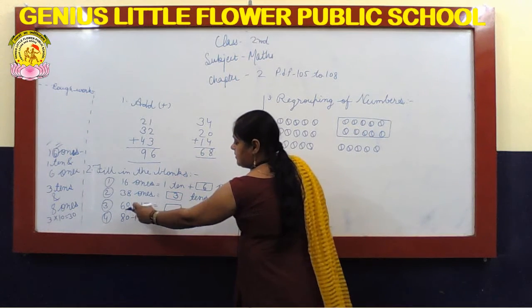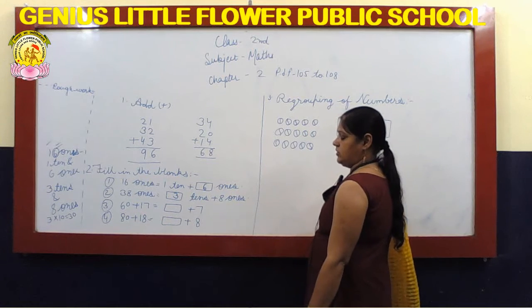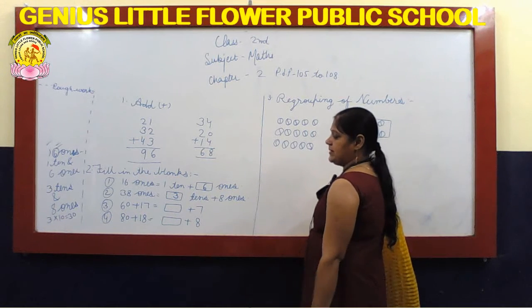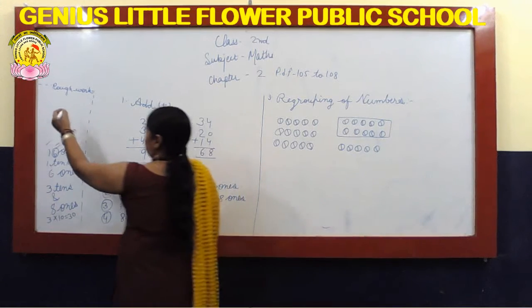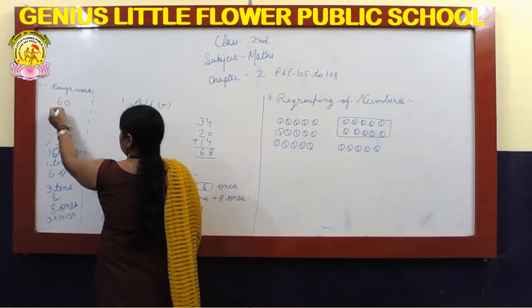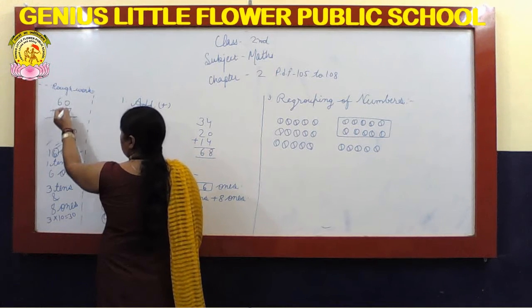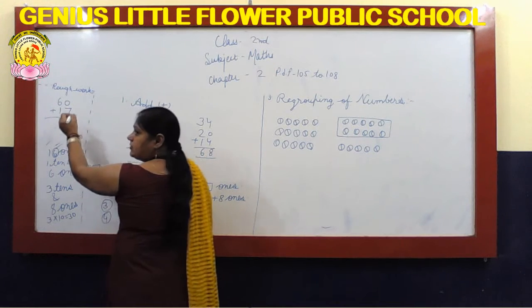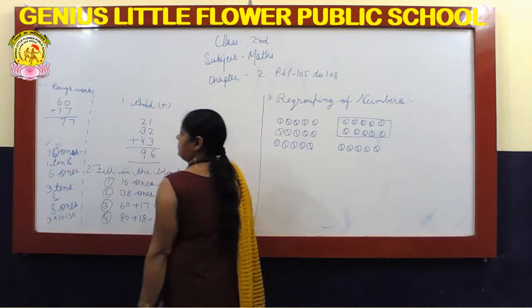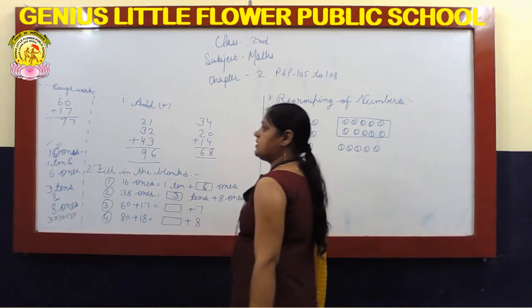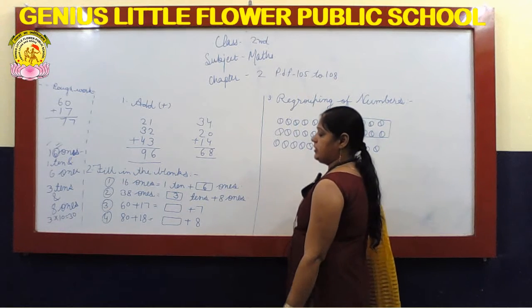Question number 3. Add: 60 plus 17. 60 plus 17 is equal to 77.